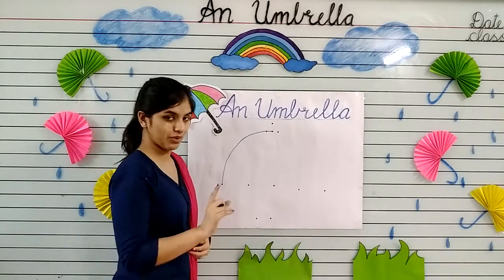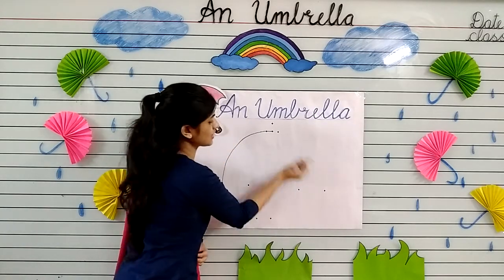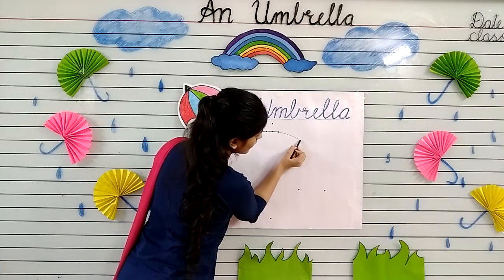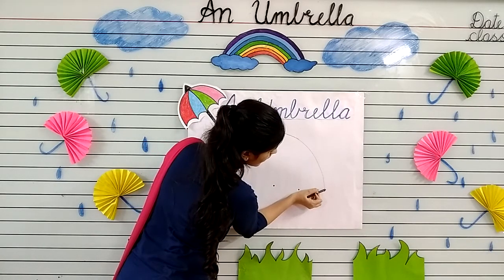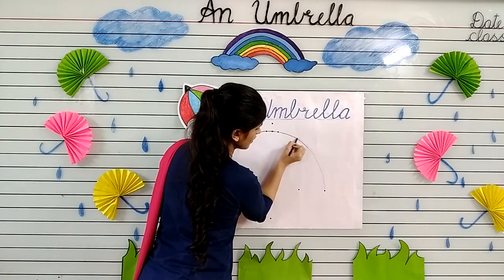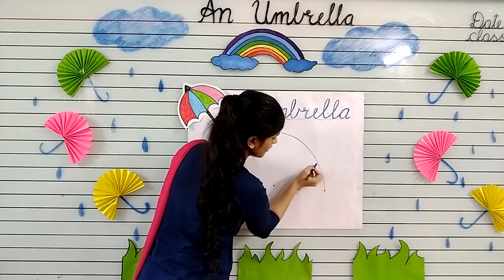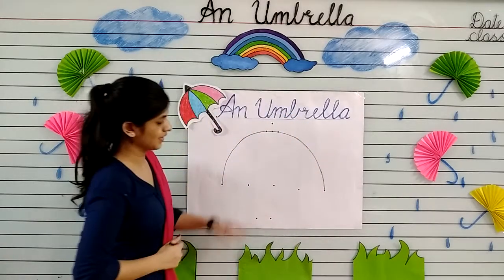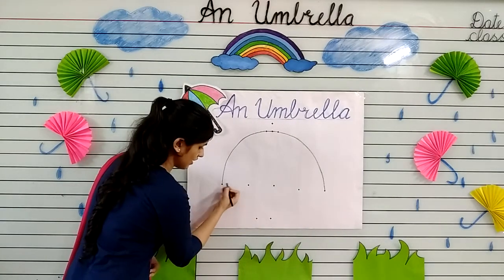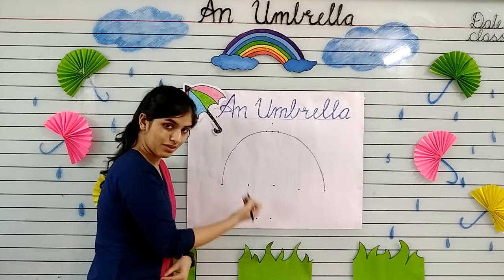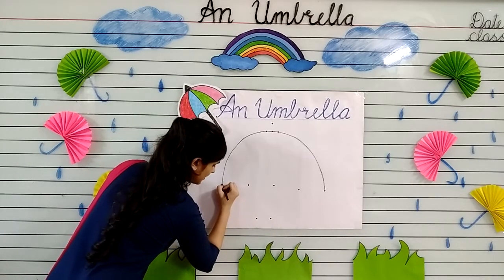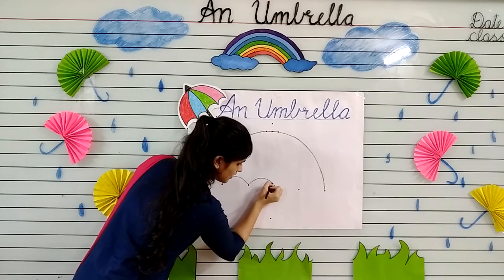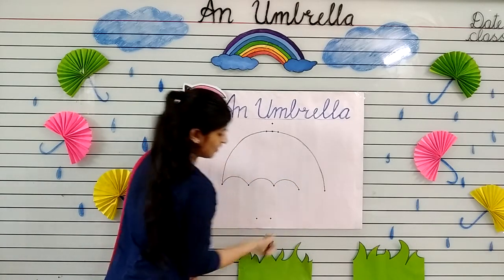Now make one more curve from this dot to this dot. Draw with me. Now make it dark. Our curve is ready. Now put your crayon at this dot and make one more curve from this dot to this dot — like this. Again, one more curve from this dot to this. One more. And the last one.